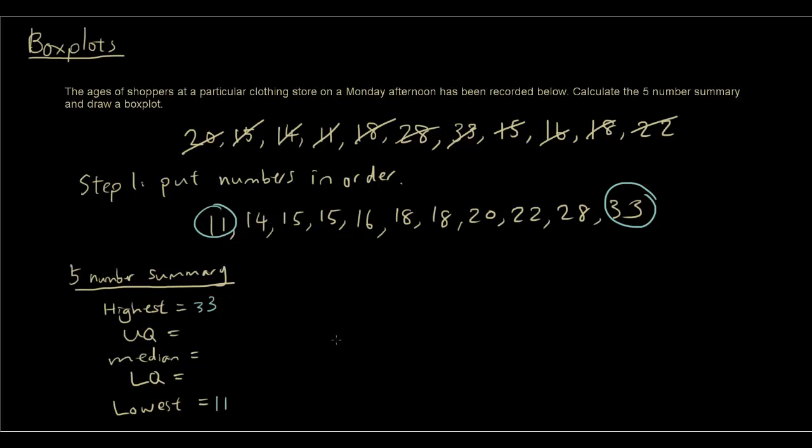So to get the median, the first thing I want is to find the median position. Is n plus 1 over 2. n is how many people there are. 1, 2, 3, 4, 5, 6, 7, 8, 9, 10, 11. 11 people plus 1 divided by 2. So that's 12 over 2 which is 6. So 1, 2, 3, 4, 5, 6. 18 is the median.